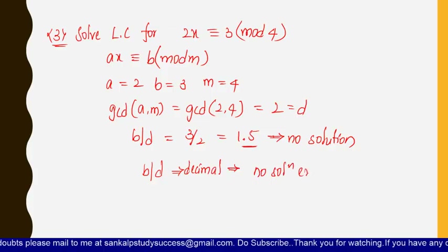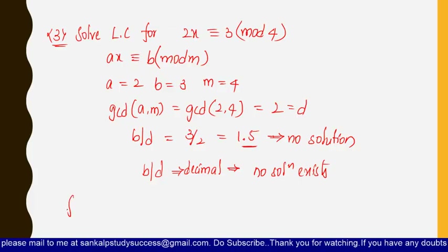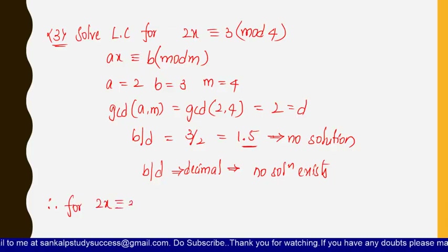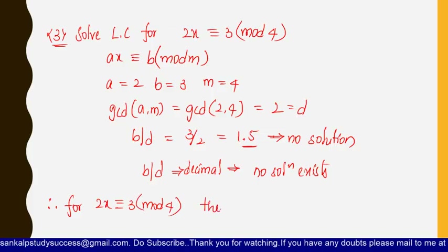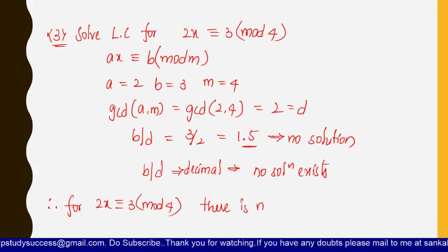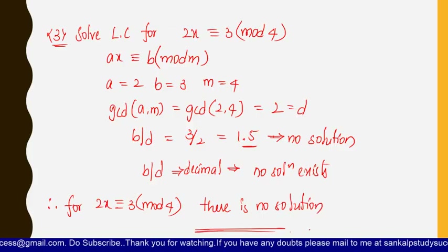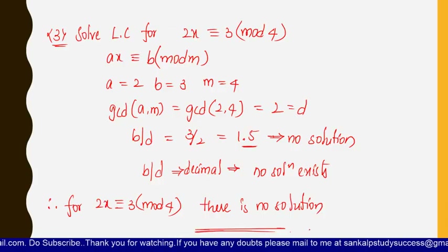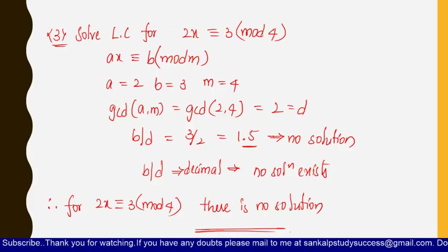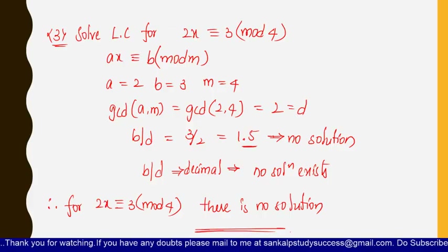Therefore, for the equation 2x ≡ 3 (mod 4), there is no solution. In general, you need to first determine whether a solution exists for a given linear congruence; if it does, find the solution. If not, state that no solution exists. Thank you for watching; we will meet in the next video with a new topic.